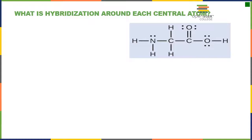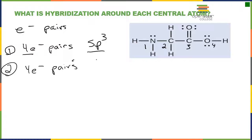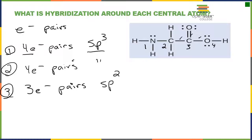To determine hybridization, we ask how many electron pairs each central atom has. For central atom one: four electron pairs, trigonal pyramidal geometry, SP3 hybridization. Central atom two is a carbon with four bonds and four electron pairs — also SP3. Carbon three has one single, one single, and one double bond, giving three electron pairs — remember, a double bond counts as one — so that is SP2 hybridization. Carbon four has two lone pairs and two bonds, a total of four electron pairs, also SP3.